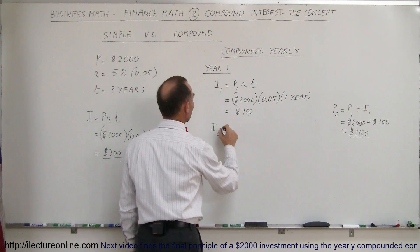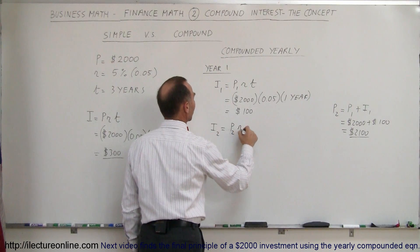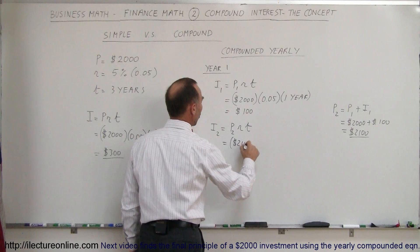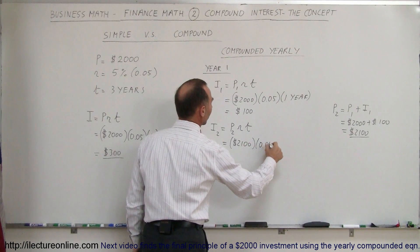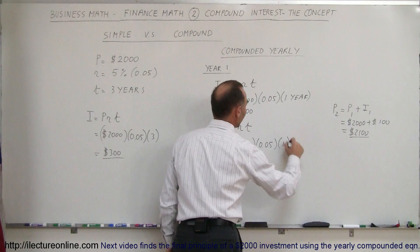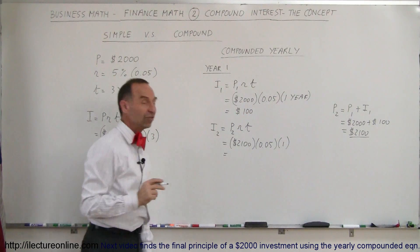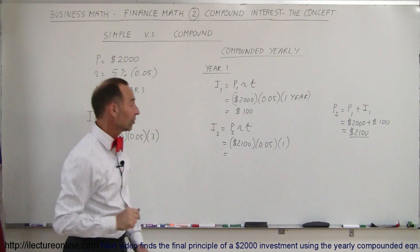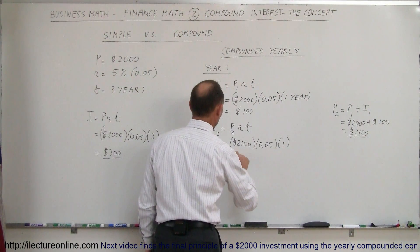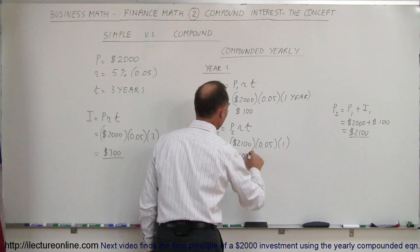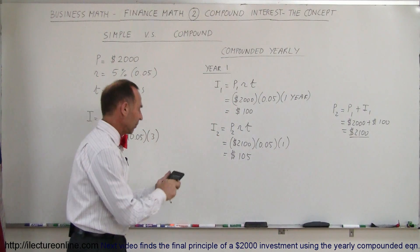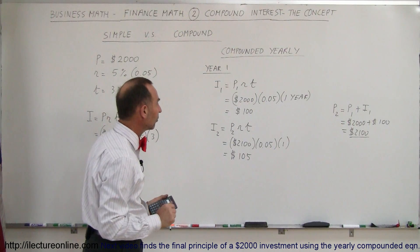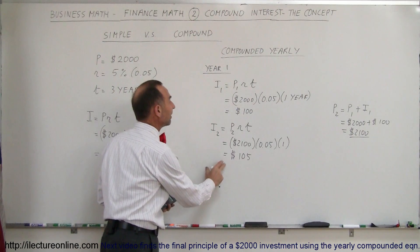The interest earned in the second year is equal to the principal of the second year times the rate times the time. So in this case that's $2,100 times 0.05 times one year. $2,100 × 0.05 = $105. So $105 is the interest earned in the second year.